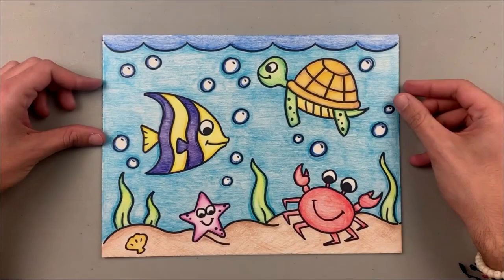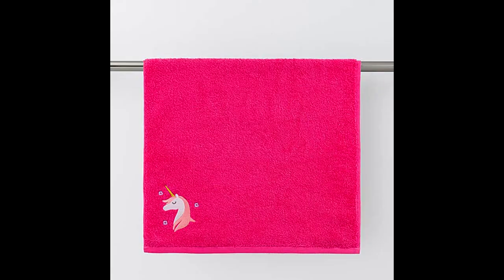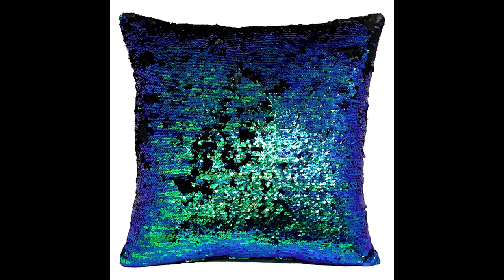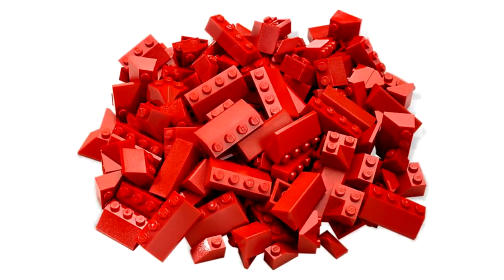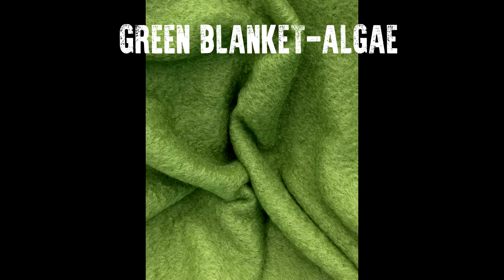For the second landscape, the process was the same — first the base image, then the textures. The sand is sand. The chest is wood. The starfish is a pink towel. The fish is made of sequins. The turtle shell is cardboard. The bubbles are an image of bubble wrap, and the crab is made of red LEGO pieces. The sea floor removal is metal.